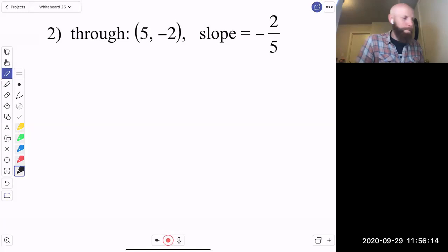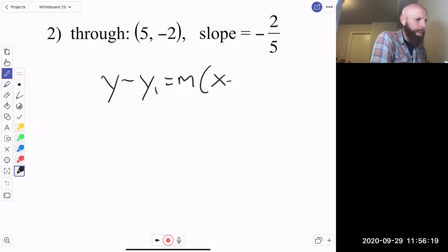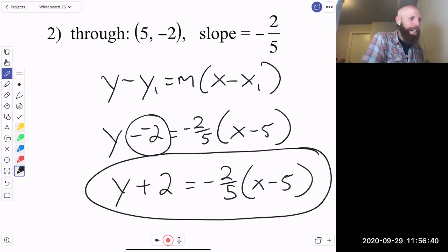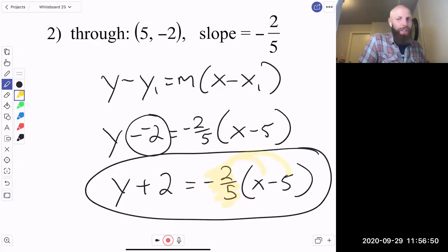Here's what you got. Y minus y1 equals m times x minus x1. Always just kind of thinking about what that is. Y minus negative two equals negative two-fifths times x minus five. Clean it up. Y plus two, this little thing right here, minus a negative is a plus, equals negative two-fifths x minus five. Leave it. That is point-slope form. Again, we could go a step further and we could distribute this number across here and then we could subtract two from both sides and we can get this in the slope-intercept form. For now, just leave it in point-slope form.